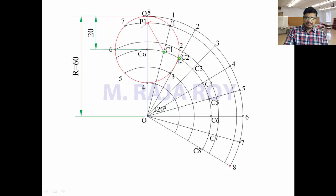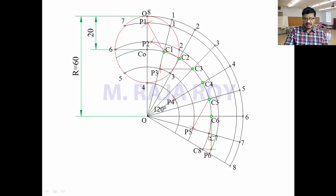Take C2 as centre with the same radius and draw the arc onto the locus of 2 — that is P2. With the same radius draw the arc onto the locus of 3 — here you will get P3. C4 as centre, draw the arc onto the locus of 4 — somewhere here you will get P4. C5 as centre with radius 20, draw the arc onto the locus of 5 — somewhere here you will get P5. Take C6 as centre with radius 20, draw the arc onto the locus of 6 — somewhere here you will get P6. Take C7 as centre, draw the arc onto locus of 7 — this is P7. Here you will get P8. Now join all these points with a smooth freehand curve — this is the hypocycloid.